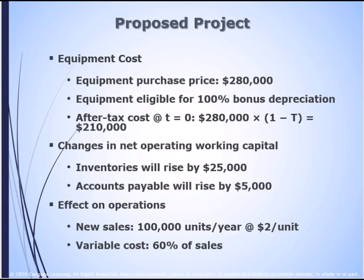Let's look at a project. We have an equipment cost of $280,000. The current tax code allows for 100% depreciation on this asset, so the very first year we'll be able to depreciate 100% of this asset. We need to know the after-tax cost of the asset. To find after-tax at time zero, you take the cost and multiply it by 1 minus T. So the actual equipment cost after taxes is $210,000.